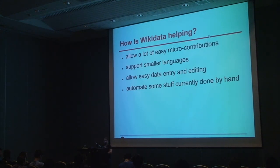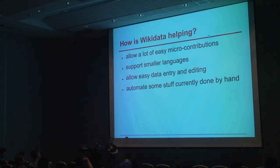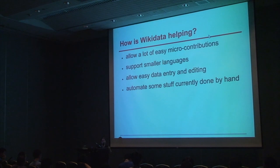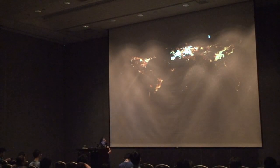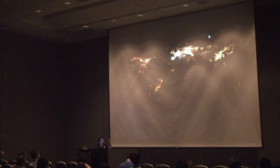It supports a lot of languages, and especially for small languages this is going to be really useful. It allows easy data entry and editing — you can just edit using a nice form instead of having to do it all in Wikitext. And since this is all structured data, it's very easy to edit with a bot and automate a lot of tasks that are currently still done by hand. This is what the map looks like after 40 days of use on Wikidata — currently all the geocoordinates in Wikidata, which is already more than what we saw for the English language Wikipedia.